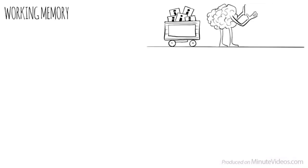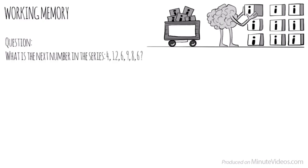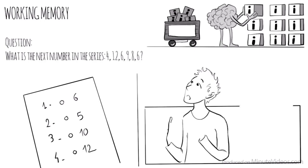The second section was about working memory. Our ability to keep several chunks of information in our mind simultaneously. One of the questions was, what is the next number in the series? 4, 12, 6, 9, 8, 6. There were four options: 6, 5, 10, or 12.